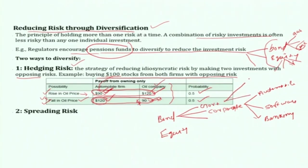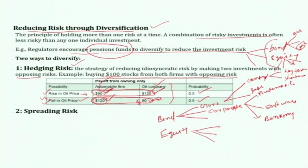Similarly, within government bonds you diversify across central government, state government, long-term and short-term bonds. Within equity, make investments in seemingly unrelated firms. Through this approach, we can spread the risk and reduce it through proper diversification.